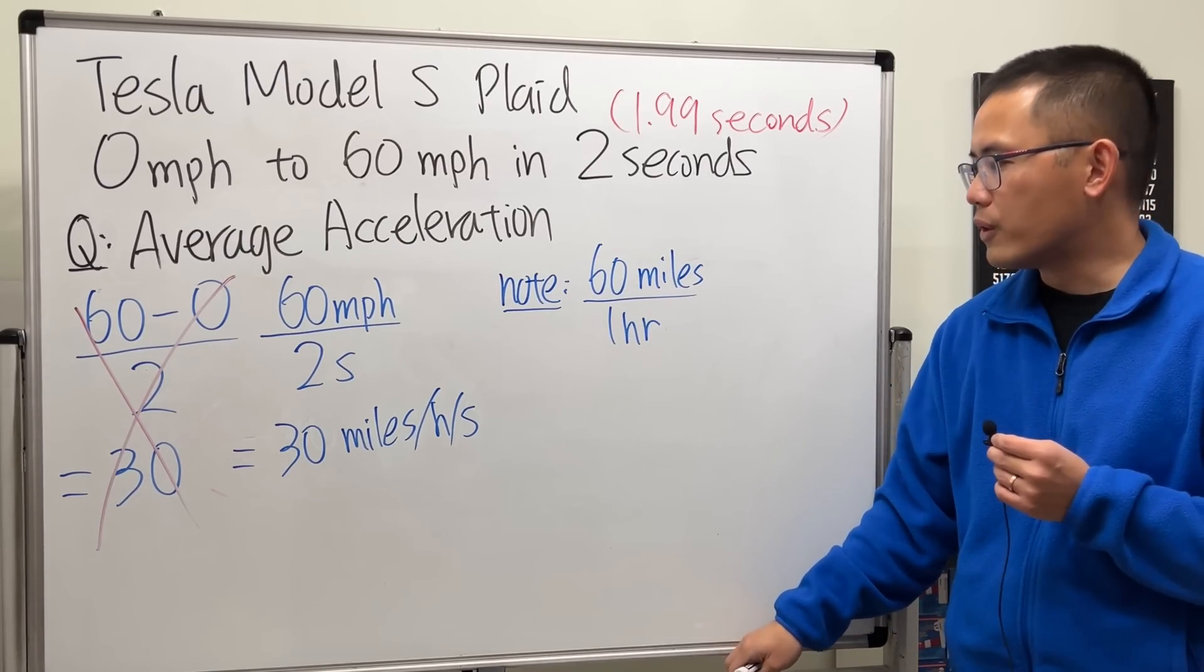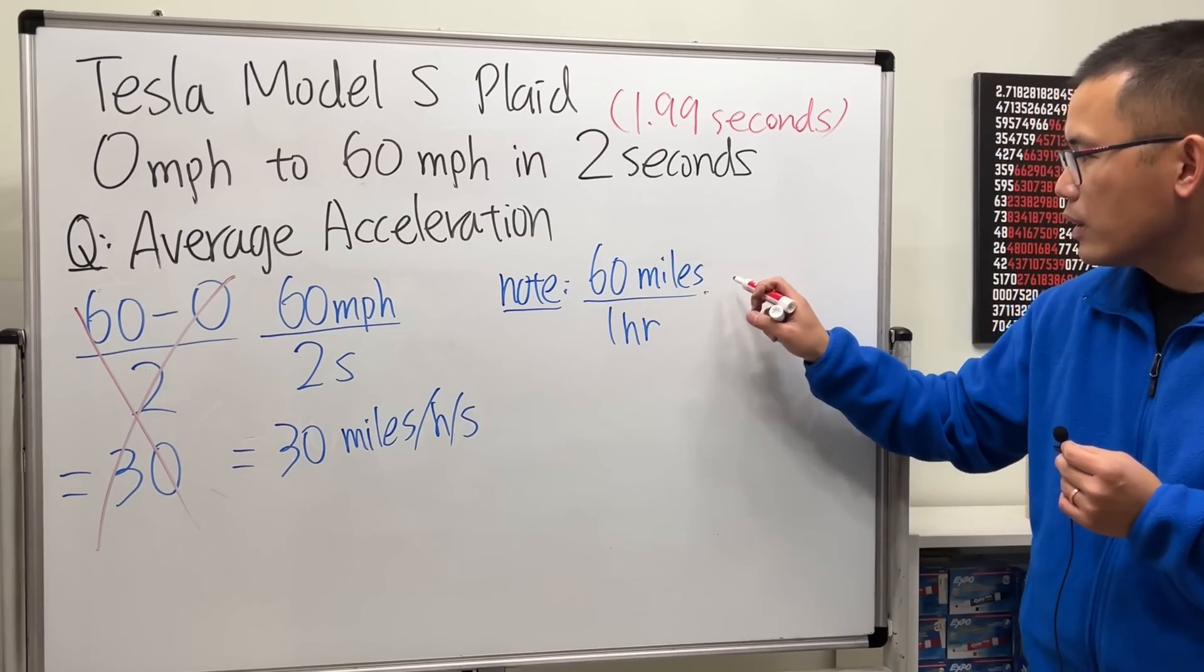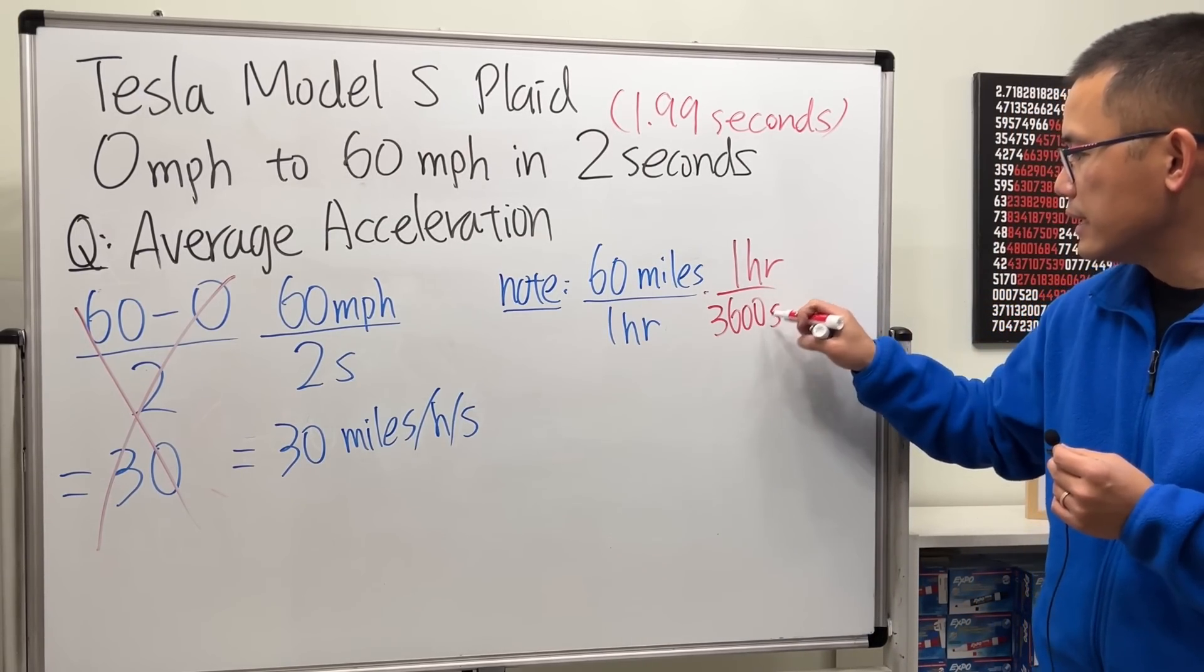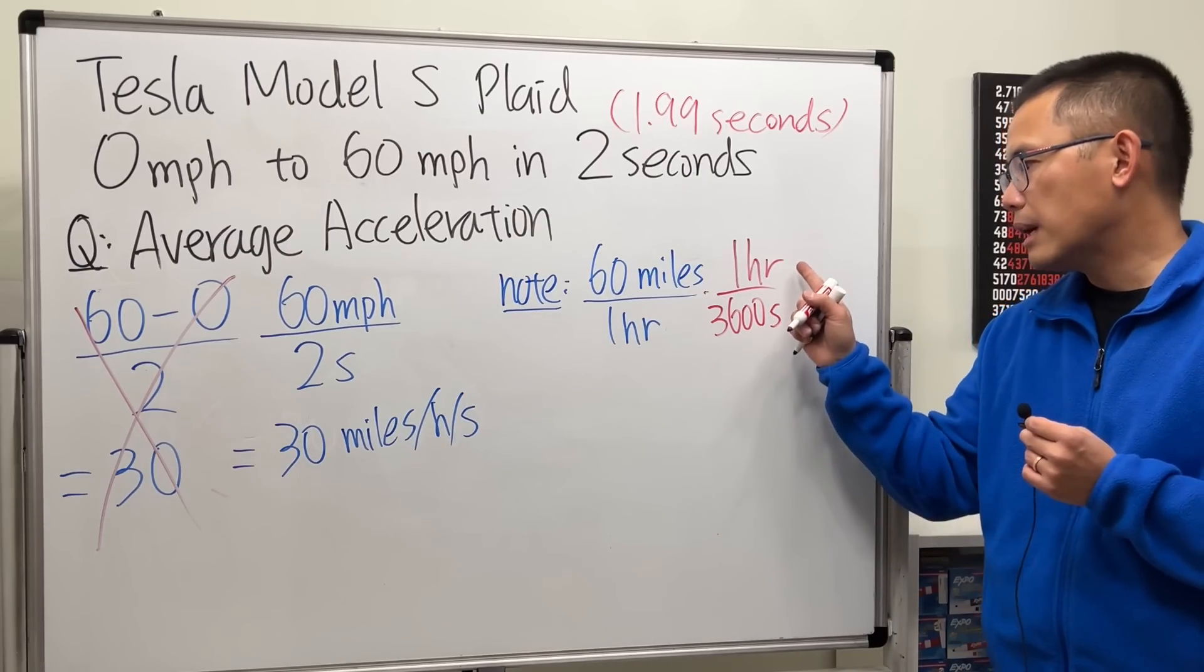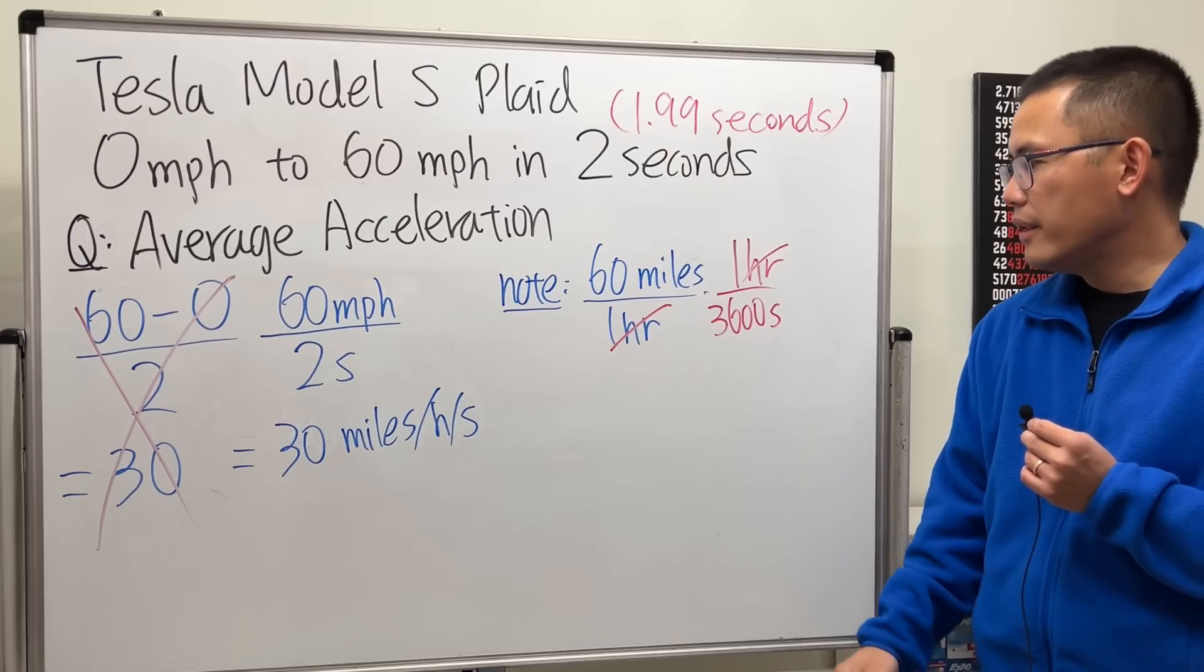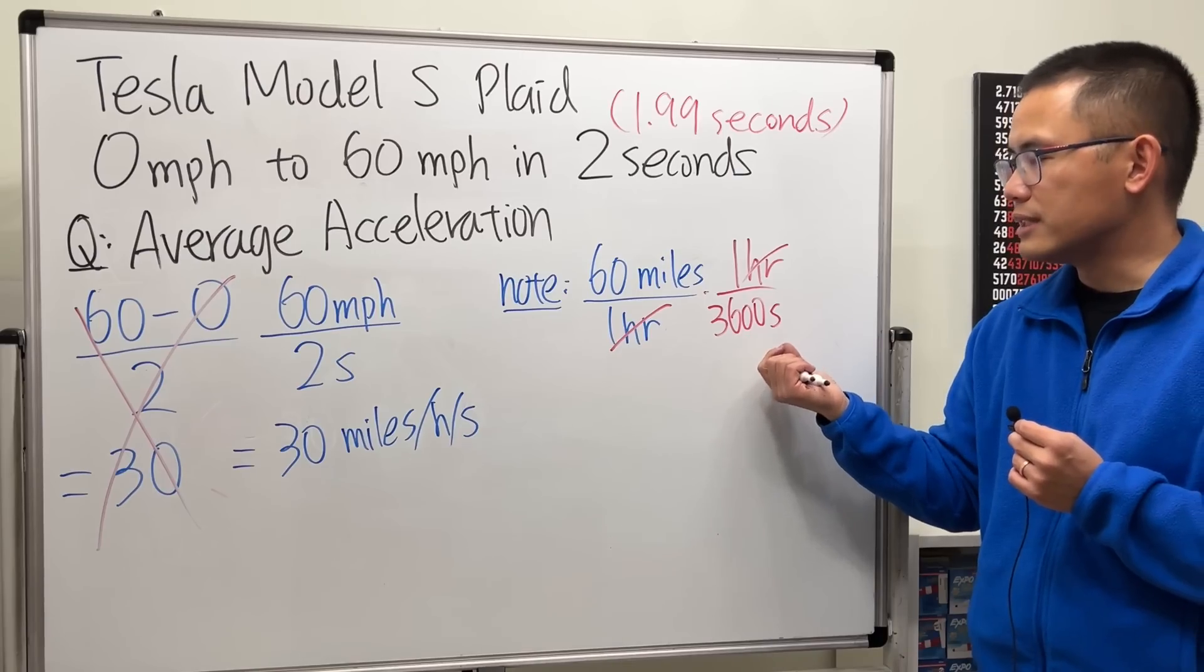And to do so we know that one hour equals 3600 seconds. And the reason I put the hour on the top is so that the hour unit can cancel. And now we have 60 miles over 3600 seconds.